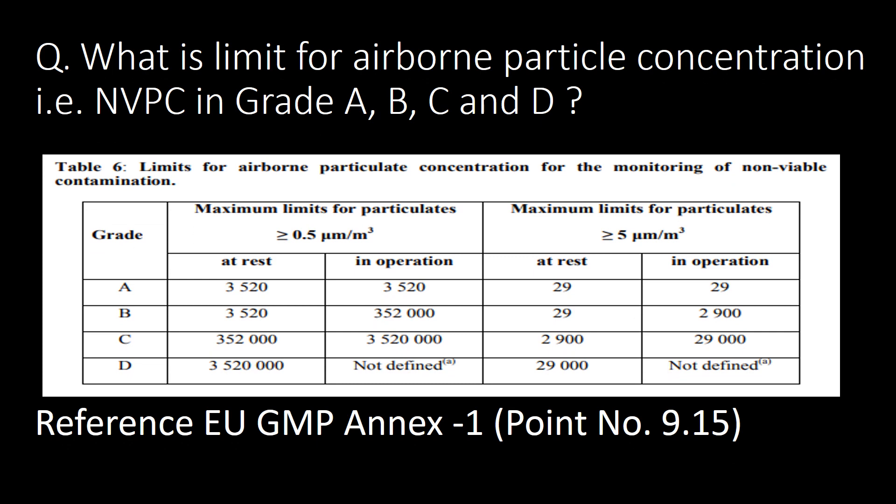What is the limit for airborne particle concentration, i.e. NVPC, in Grade A, B, C and D? You can refer to the table below for limits for airborne particulate concentration for the monitoring of non-viable contamination. Reference: EU GMP Annex 1, Point No. 9.15.